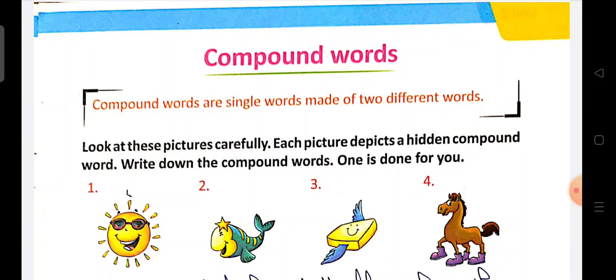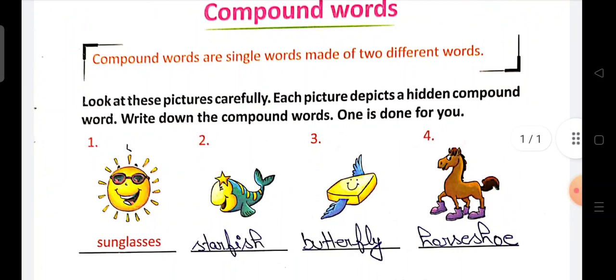Let's start to understand about it. Compound words are single words made of two different words. Do alag single different words hote hai, unko add karke ek naya word banana - that is compound words.